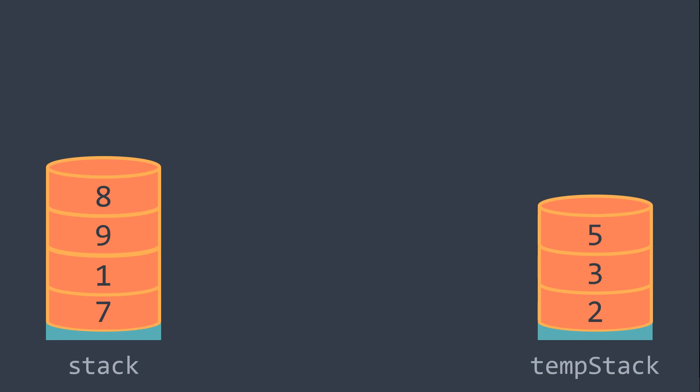But wait — in the problem description, we said the smallest value must be at the top of the stack at the end, and the opposite is happening here — the smallest value is at the bottom. Basically, we are storing values in descending order in the temporary stack, because when we put them back in stack at the end, they will become in ascending order — you'll see it later.